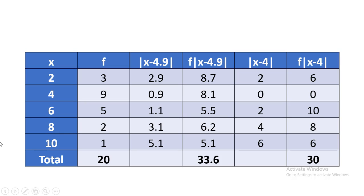For the median (= 4), the absolute deviations |x − 4| are: |2−4| = 2, |4−4| = 0, |6−4| = 2, |8−4| = 4, |10−4| = 6. Multiplying by corresponding frequencies F × |x − 4|: 3×2 = 6, 9×0 = 0, 5×2 = 10, 2×4 = 8, 1×6 = 6. The sum of all these values is 30.